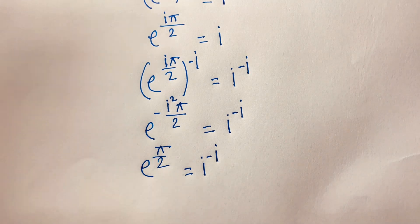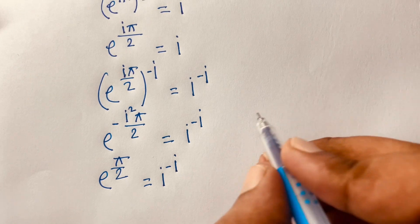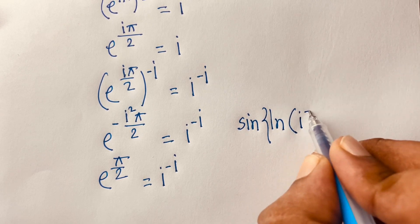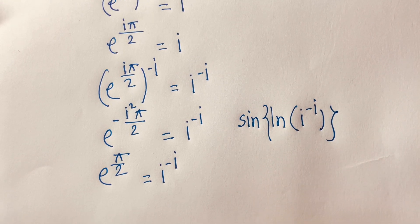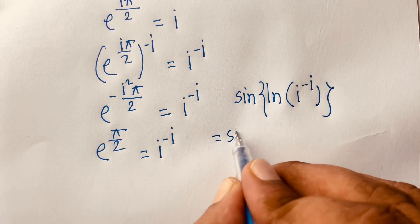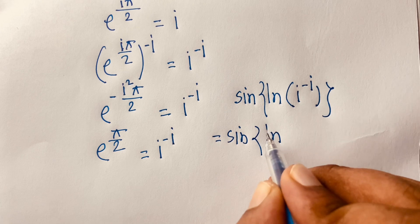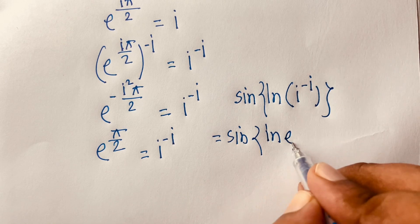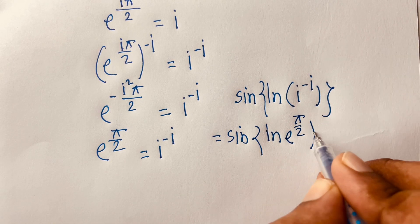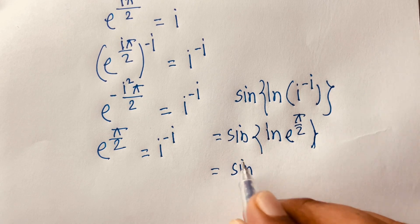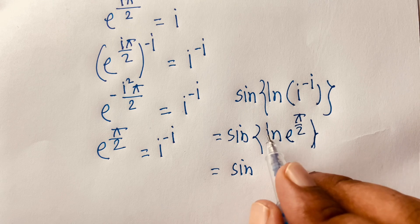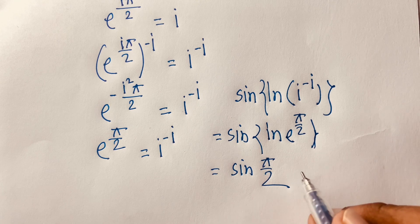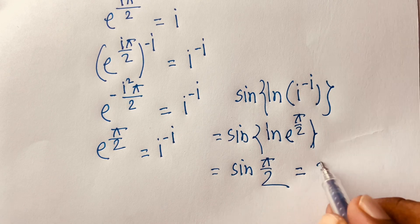Our question is sin(ln(i to the power minus i)). We found that i to the power minus i equals e to the power pi over 2. So sin(ln(e to the power pi over 2)) becomes sin(pi over 2 times ln(e)). Since ln(e) equals 1, this simplifies to sin(pi over 2).